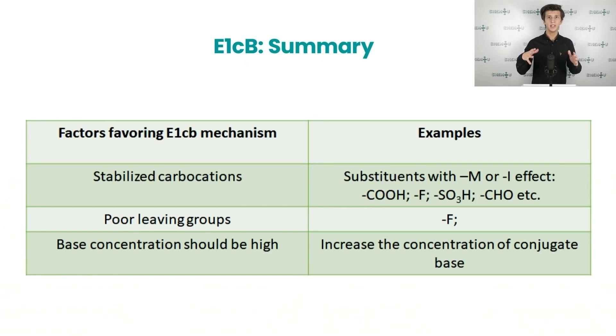Ultimately, E1CB is quite a rare mechanism that competes with E2. Carbanion stabilizing substituents and electron withdrawing poor leaving groups enhance elimination from conjugate base. As usually, here is a brief summary of factors favoring E1CB mechanism. All in all, it is the stabilized carbanions, poor electron withdrawing leaving groups, and high base concentrations that favor E1CB mechanism.